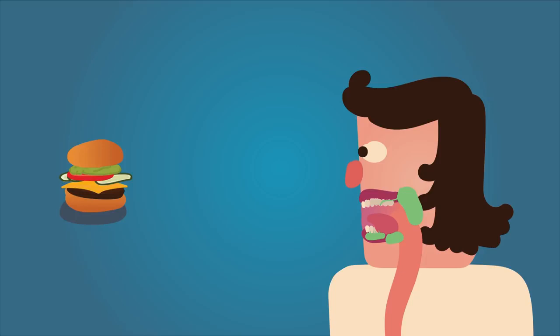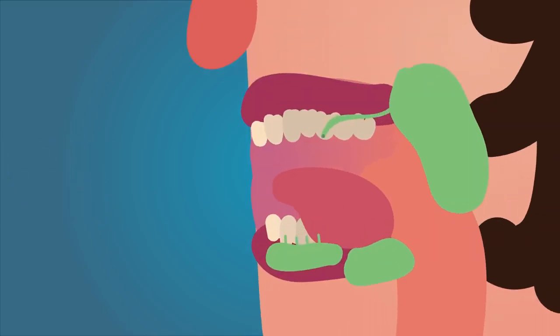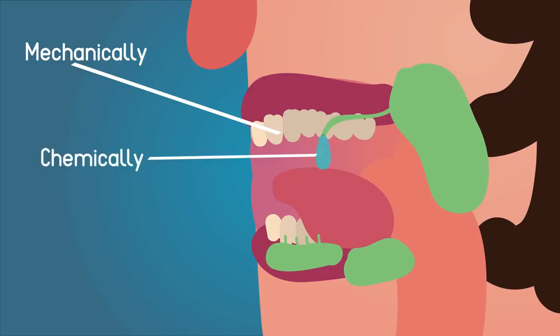When I put this burger in my mouth, I do both types of digestion. My mouth breaks it down mechanically using my teeth, which mashes up the food into smaller pieces. My saliva carries out chemical digestion. It contains an enzyme called amylase that takes the big starch molecules you find in the bun and breaks them into smaller pieces called maltose.